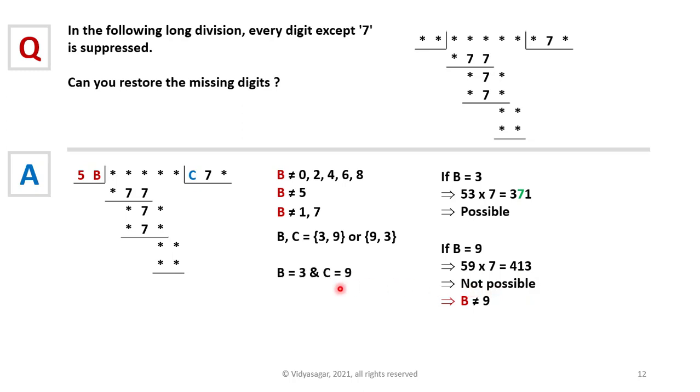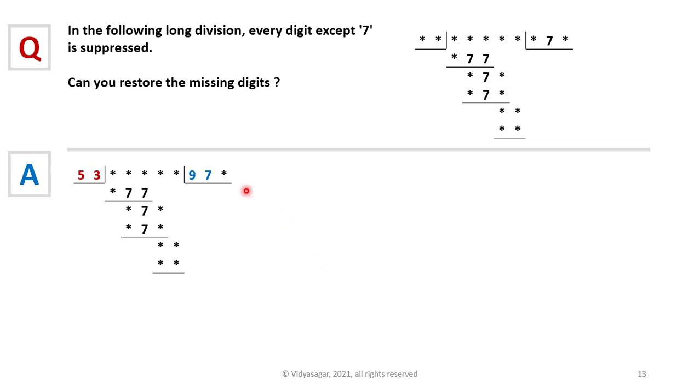Now let's assume that the last digit in the quotient is D. By multiplying 53 with D we are getting a two-digit number. So 53 times 1 is 53, 53 times 2 is 106—a three-digit number. So the only possible option for D is 1.